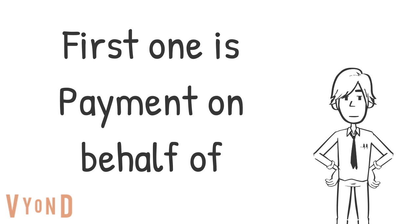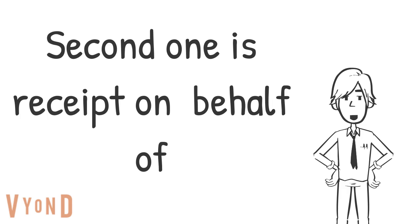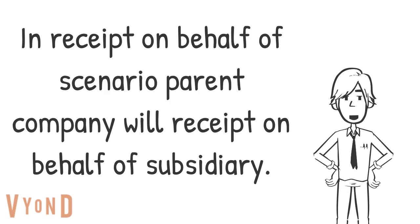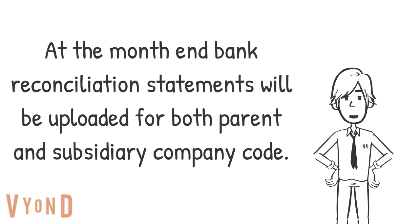The first scenario is Payment on Behalf of, and the second is Receipt on Behalf of. In the payment on behalf of scenario, the parent company will pay on behalf of the subsidiary. In the receipt on behalf of scenario, the parent company will receive on behalf of the subsidiary. At month end, bank reconciliation statements will be uploaded for both the parent and subsidiary company codes.